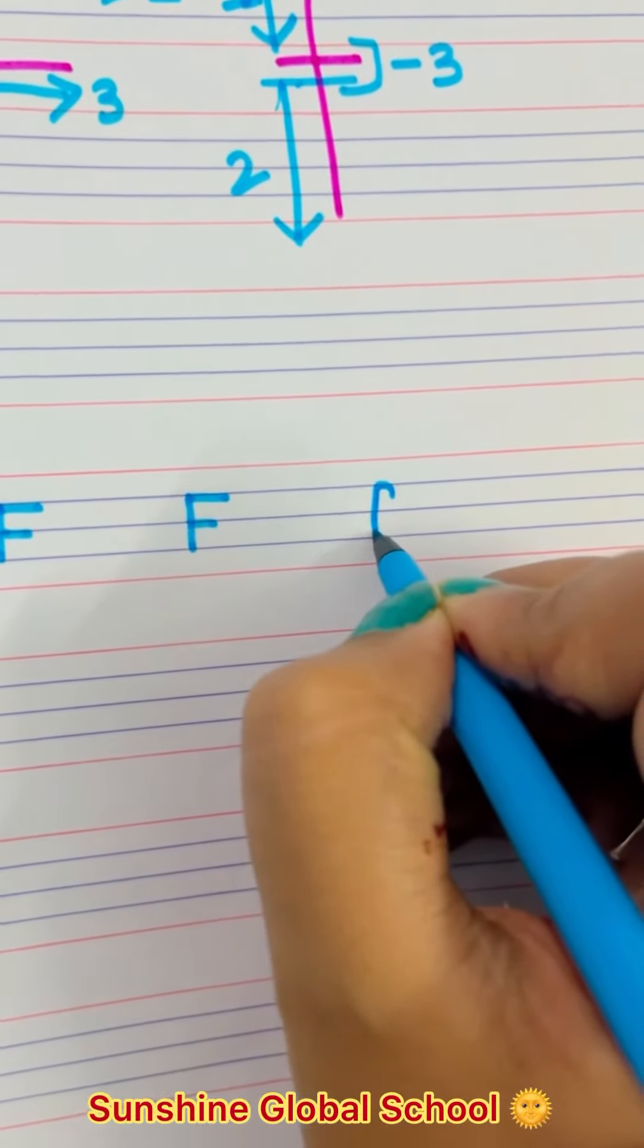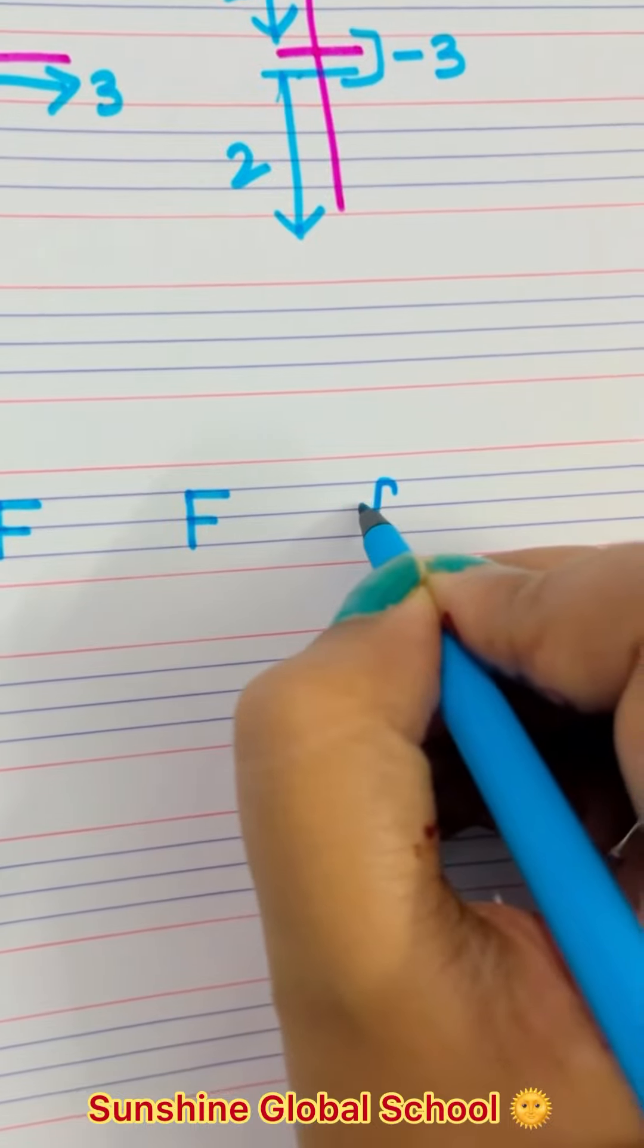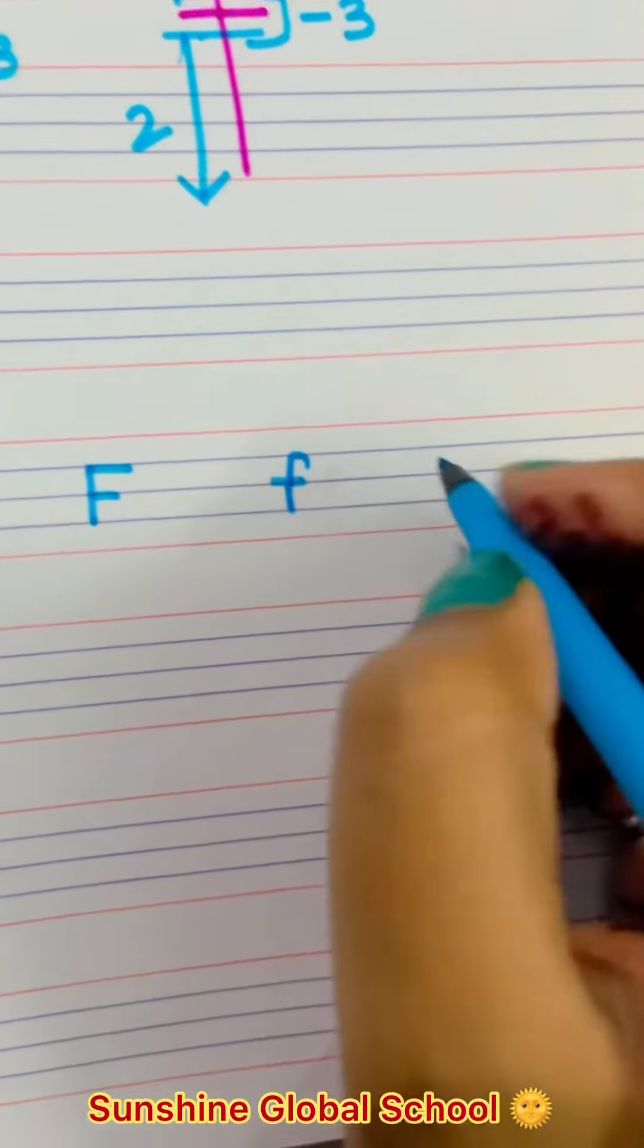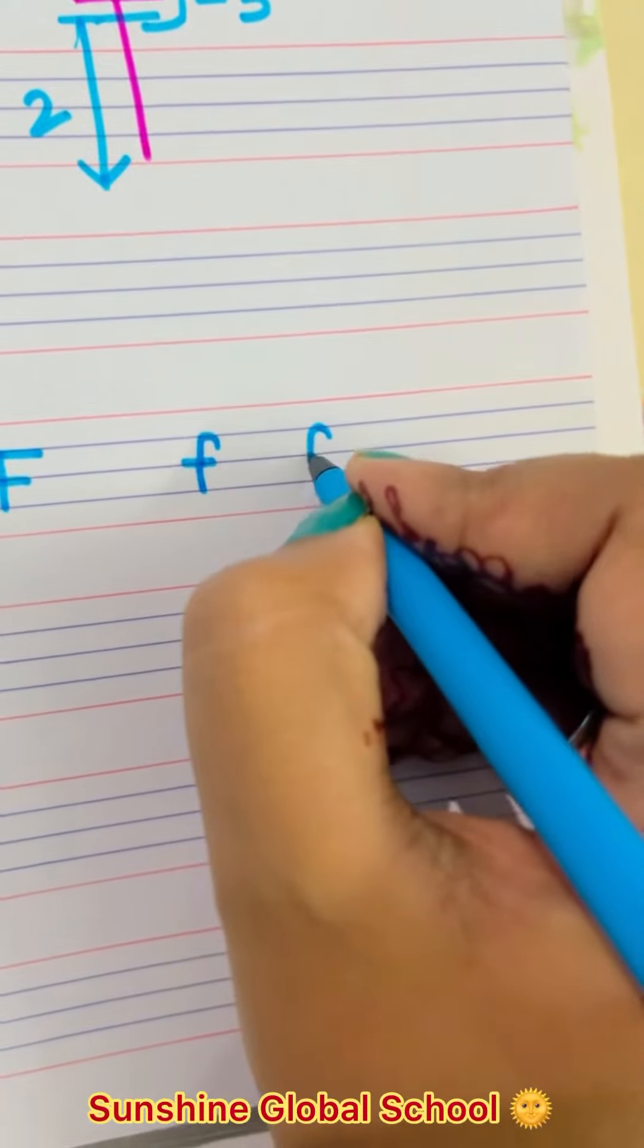Then make a standing line, and from here a small sleeping line. Again, start from here, make a curve.